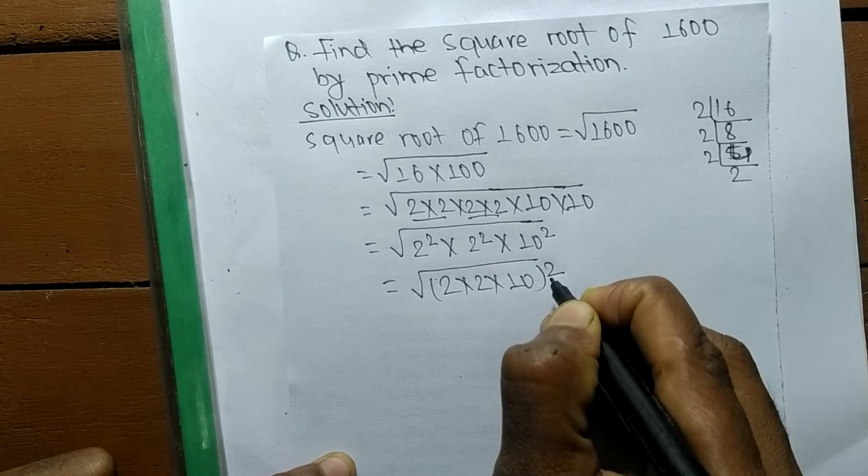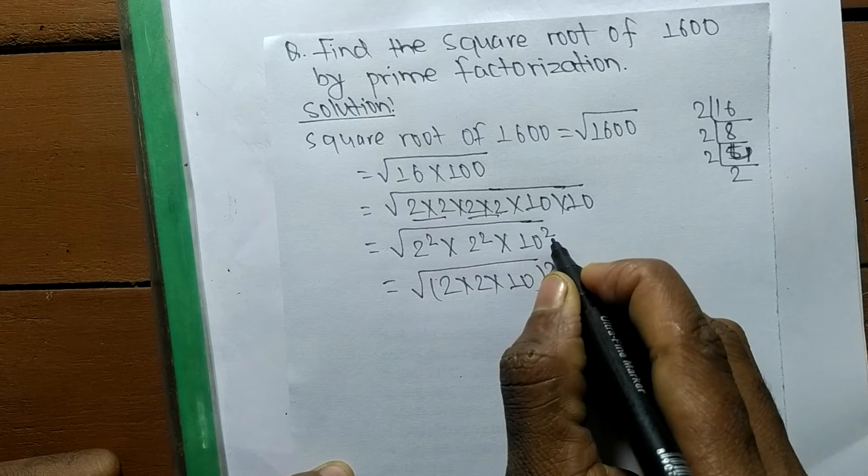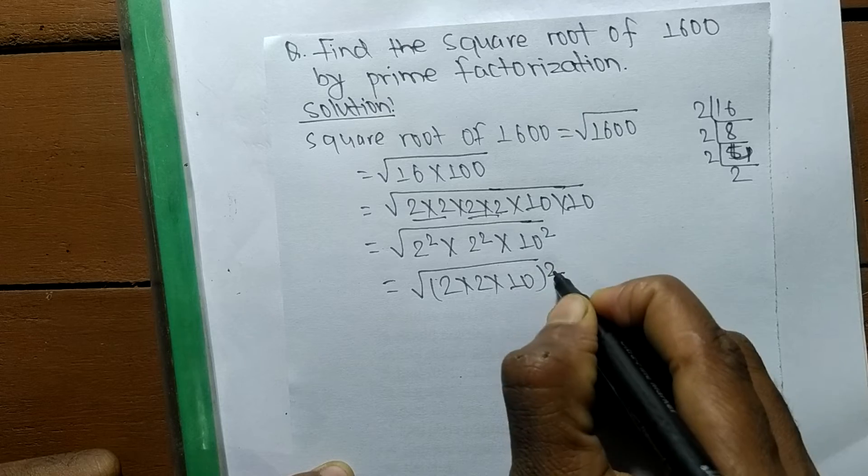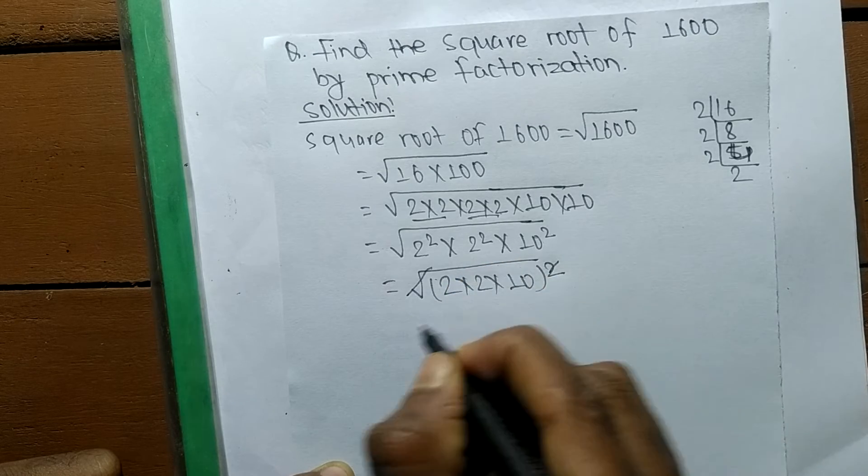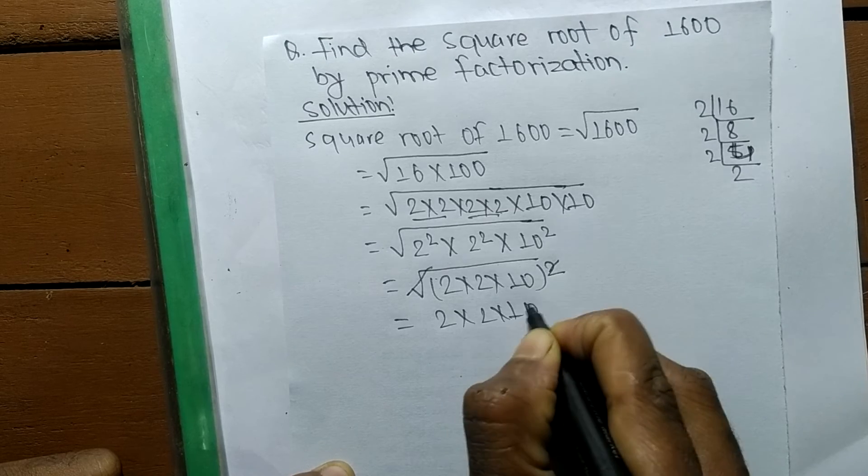I have taken square as a common because all the numbers have a square. The square and square root cancel each other, so we can write 2 into 2 into 10.